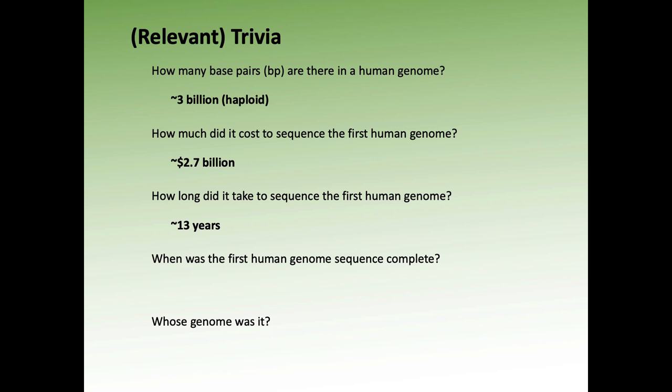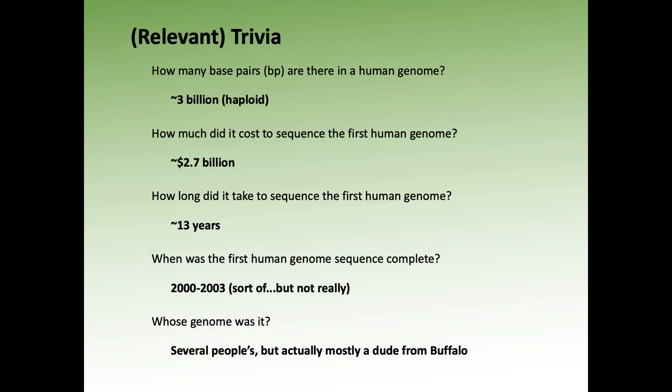It took about 13 years to generate the first human genome sequence. We can now do them in about 24 to 48 hours, depending on the platform. The first human genome sequence was completed sometime between 2000 and 2003 — though even when we said it was complete, it wasn't really complete. And whose genome was it? It was several different people's, but it was mostly a guy from Buffalo.